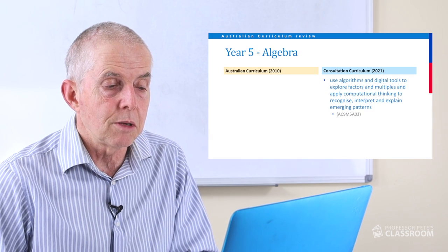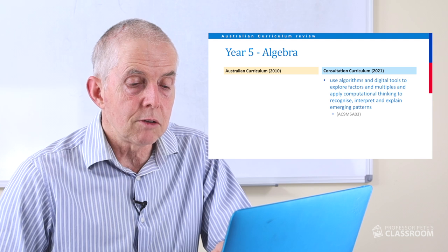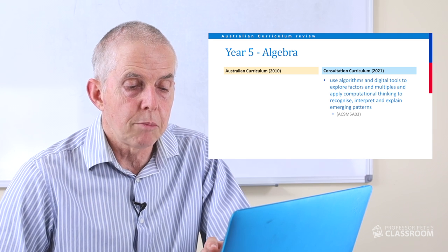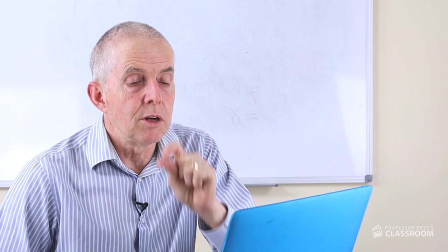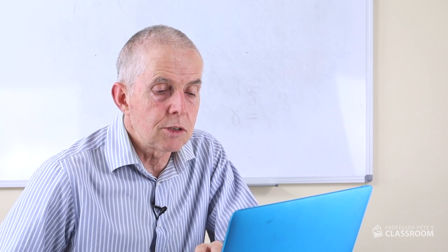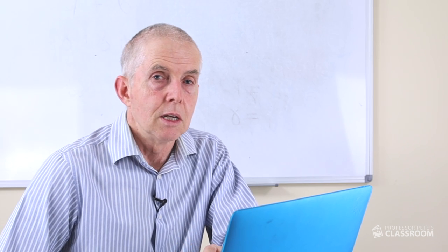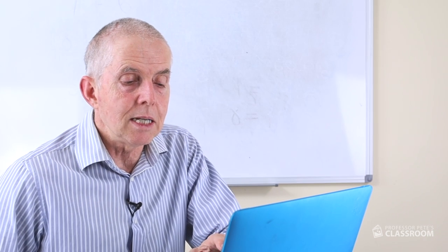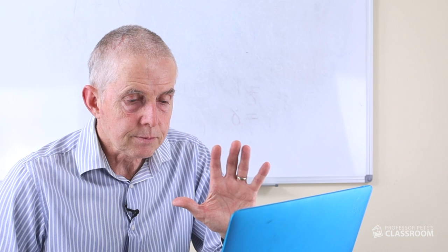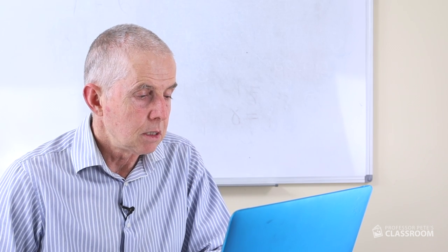The third algebra content descriptor is completely new — there was no equivalent in the existing curriculum. We have: use algorithms and digital tools to explore factors and multiples, and apply computational thinking to recognise, interpret and explain emerging patterns. I love it. But the word 'patterns' is a little bit of code I've noticed in terms of number facts — number facts have been downplayed, which is a big gap in the proposed curriculum that I've talked about in the Year 3 and Year 4 videos. In Year 5 I don't mind it, including patterns, if we can assume that number facts have been put back in the Year 3 and Year 4 curriculum. Exploring factors and multiples using technology and algorithms is very, very powerful.